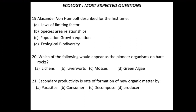Question 19: Alexander von Humboldt described for the first time — four options: law of limiting factor, species-area relationship, population growth equation, and ecological diversity. Remember that von Humboldt described for the first time the species-area relationship, so B is the correct answer.